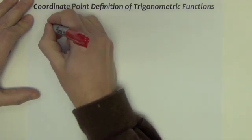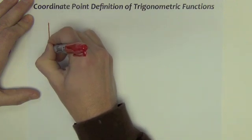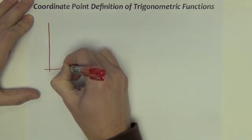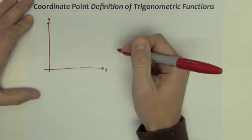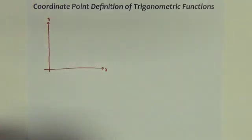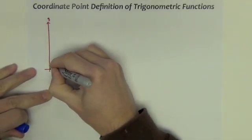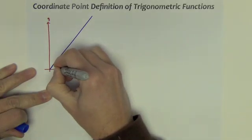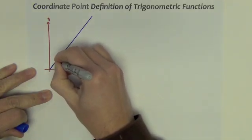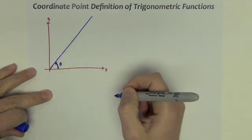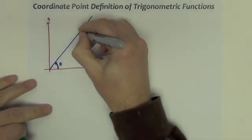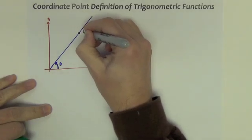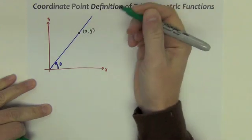So here's how we're going to build this up. I have an x-y axis. We've got some line here which forms an angle theta, and then let's say we've got some point out here on the line. We'll call this just an x comma y point.